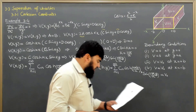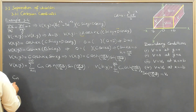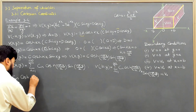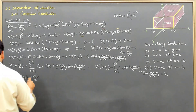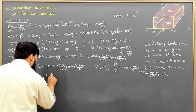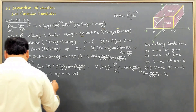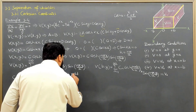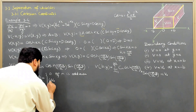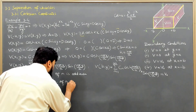We solved this in equation 3.35: cₙ·cosh(nπb/a) equals 0 when n is even, and equals 4v₀/(nπ) when n is odd. So cₙ = 4v₀/(nπ·cosh(nπb/a)) for odd n only.